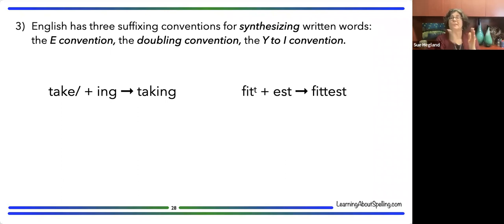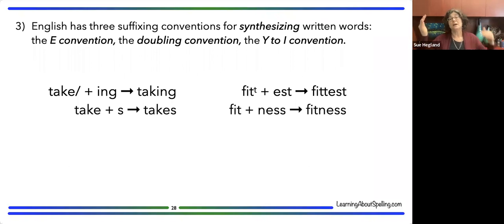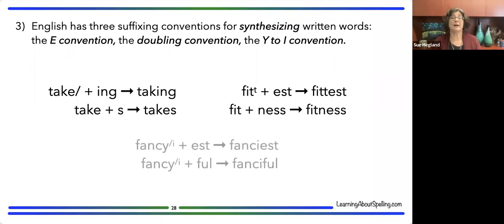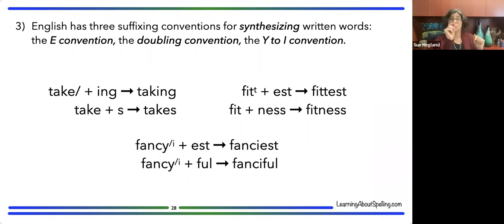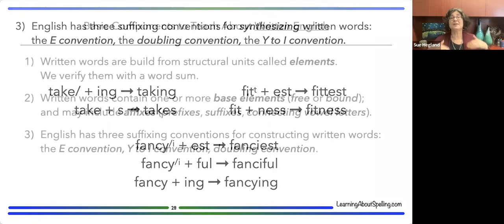The doubling convention: when a word ends in a single consonant preceded by a single vowel and stress falls there, and we add a vowel suffix, we double that consonant. When adding consonant suffixes, neither the 'e convention' nor the doubling convention applies. The 'y to i convention': when a word ends in a solo 'y' grapheme — not 'ay,' 'ey,' or 'uy' — and we add any suffix, we change the 'y' to 'i,' unless the suffix begins with 'i,' which would create two consecutive i's — something English avoids.